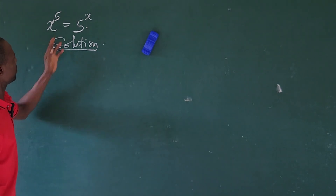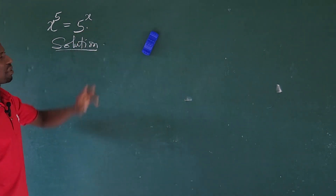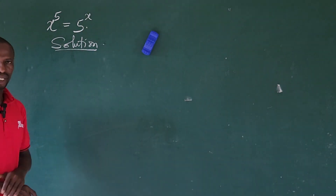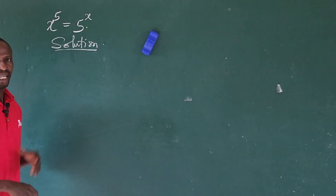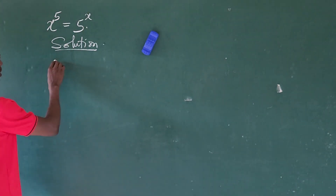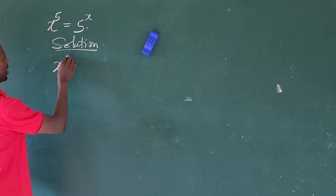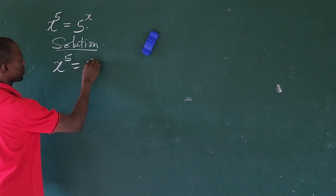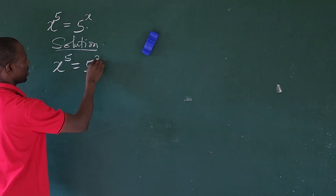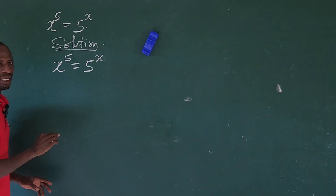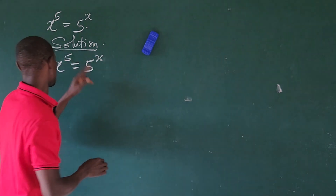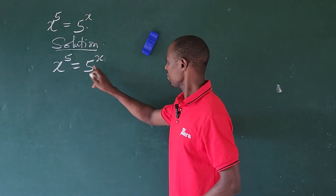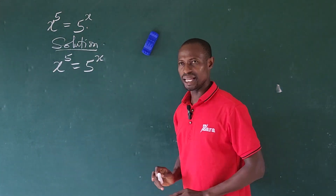So let's go without much waste of time. The question is: x to the power of 5 equals 5 to the power of x. The first approach I'm going to use is very easy. We have x to the power of 5 equal to 5 to the power of x. Let's take a look at the two exponents we have here: 5 and x.